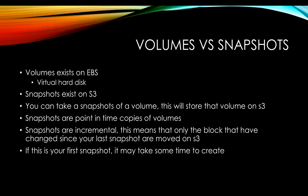There are two things: volumes and snapshots. A volume exists on EBS — it's like a virtual hard disk attached to your EBS. A snapshot exists on S3. You can create a snapshot of your volume and it will be stored on S3. Snapshots are point-in-time copies of volumes. Snapshots are incremental, meaning only the blocks that have changed since your last snapshot are moved to S3.